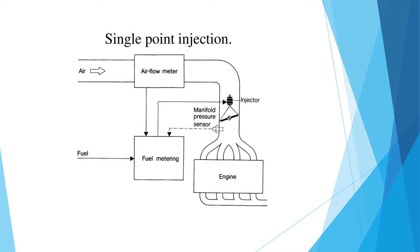Here is the picture of the single point injection system, where air moves to the air flow meter and fuel moves to the fuel flow meter. At the injector, fuel is sprayed and mixed with air near the throttle body, which is why it is known as a throttle body injector — and that is why it is called a single point injector. After mixing, the mixture enters the intake manifold and then goes to the cylinder. After combustion, exhaust goes from the cylinder to the exhaust manifold, and via the silencer it comes to the atmosphere.